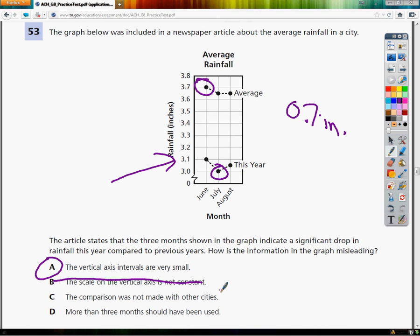C says the comparison was not made with other cities. But the article states that the three months shown in the graph indicate a significant drop in rainfall this year compared to previous years. It doesn't say anything about other cities at all. So that's just like an outlier. That's kind of like a red herring. They just put it in there to try to make you pick it.